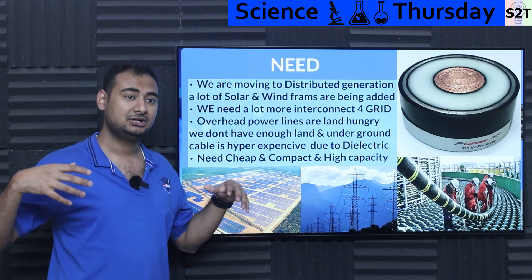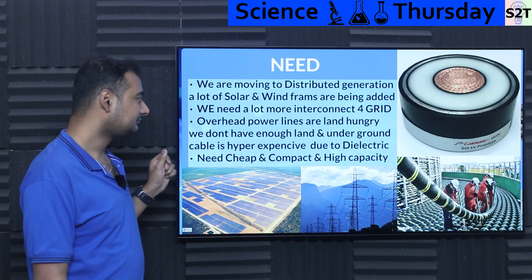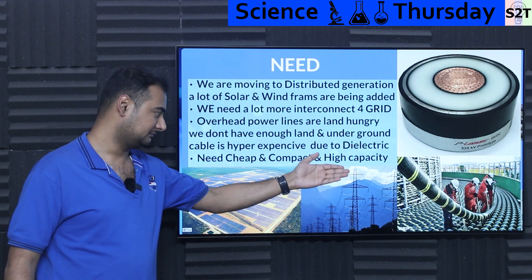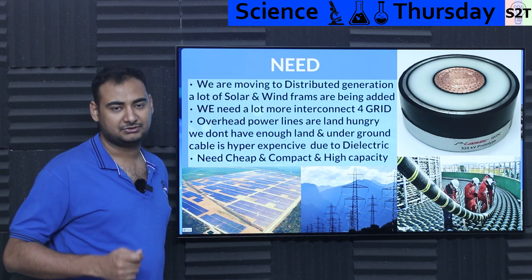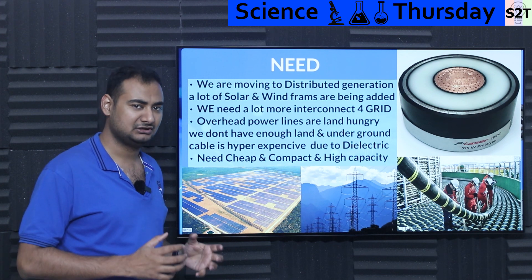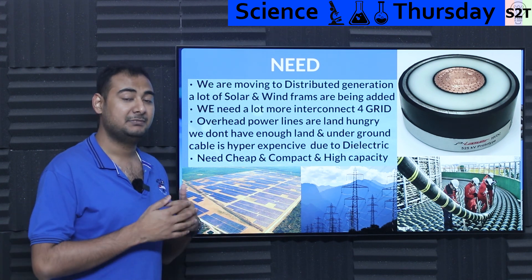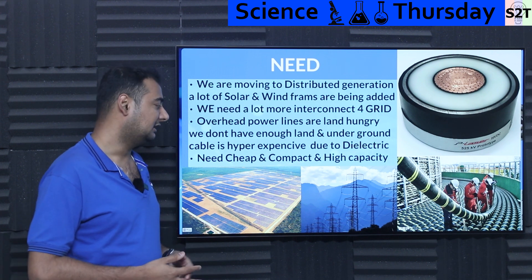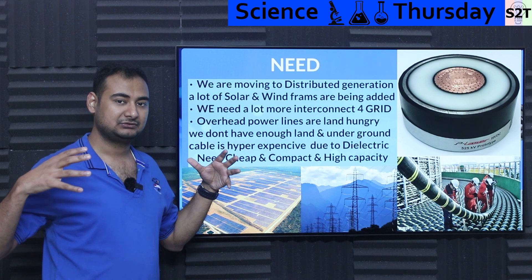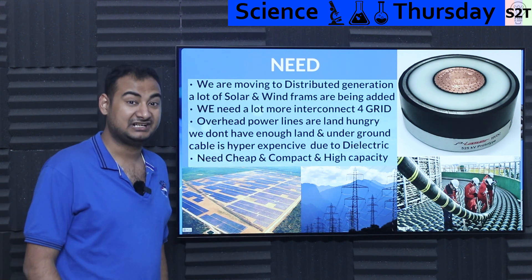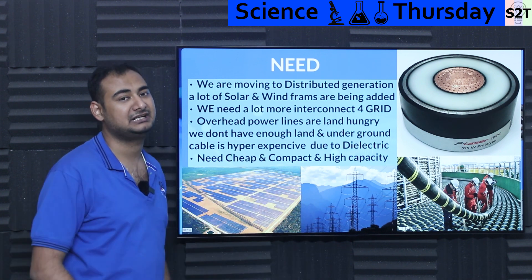Overproduction is happening — it's not that there is no demand, just that the grid is the weak link, unable to carry enough power from enough places. So why not just build more overhead power lines? We have one century of experience building them. They do work, but if you really want to carry large amounts of power — around 200 kV, 300 kV, gigawatts — they become extremely land hungry.